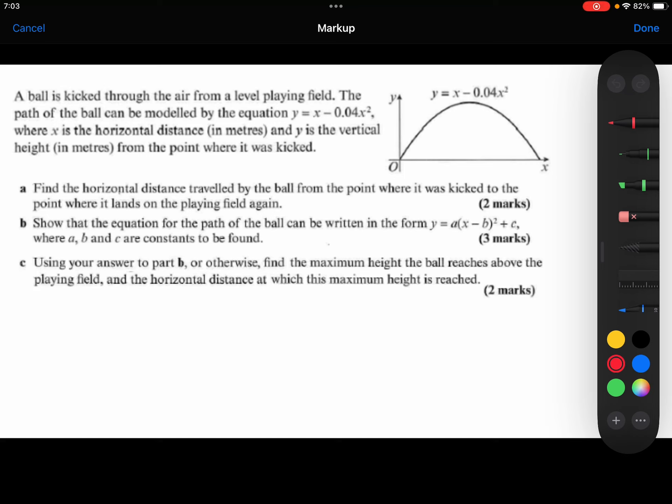Part A. Find the horizontal distance traveled by the ball from the point where it is kicked, which is here, to the point where it lands, which is here. At both of those points, we know that y is 0.